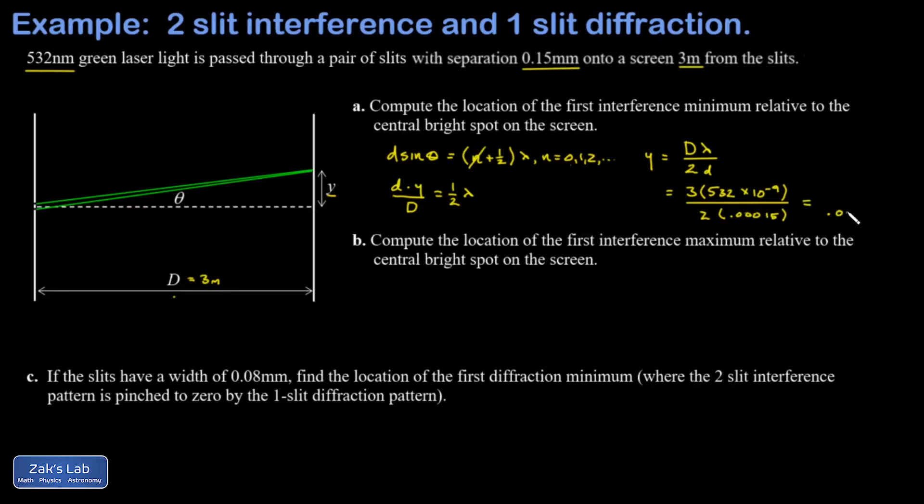In part b, I want the location of the first interference maximum relative to the central bright spot on the screen. And the way this formula turned out—and again I'll post a link to it as I go—is d sin θ equals n λ, where n is 0, 1, 2, and so on.